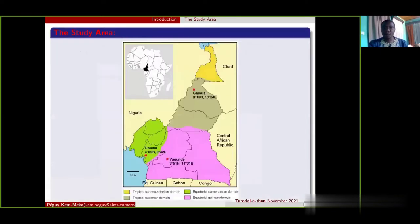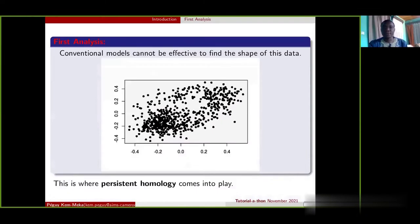Cameroon is a country in Central Africa. Here is the map of Africa. Here is the map of Cameroon. In the first analysis, when we observe our data, it looks very noisy and very scattered. Therefore, conventional models like linear regression and clustering cannot fit our data.